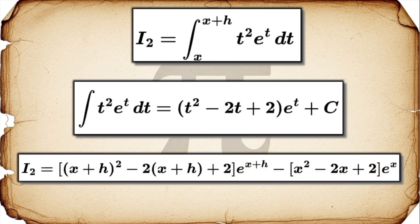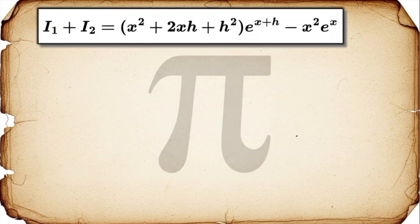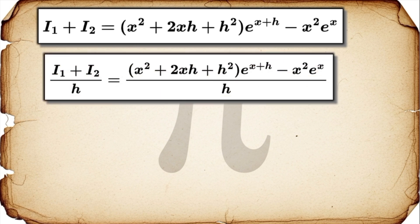Alright, here comes the fun part, the algebra. We have to add the results of those two integrals together. And I know it looks like an absolute mess at first, but you have to trust the process. When you carefully group the terms with e to the x plus h, and the terms with e to the x, and just simplify everything down, a whole lot of stuff cancels out. And you're left with this much, much cleaner expression. It's really quite satisfying.